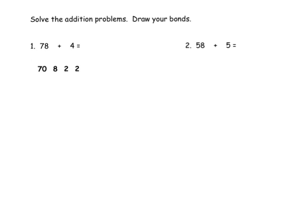Let's do a couple of practice problems. We've been given 78 plus 4, and it's already started here. 78 decomposes to 70 and 8. Using that 8, we want to make a 10, so we decompose the 4 to 2 plus 2. That gives us a 10, so now we have 70 plus 10, which gives us 80 plus the extra 2.